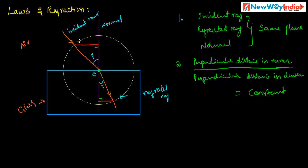If you repeat this experiment for different angles of incidence, the ratio of perpendicular distance in the rarer medium to the perpendicular distance in the denser medium is constant for all values of angle of incidence. This is the second law.